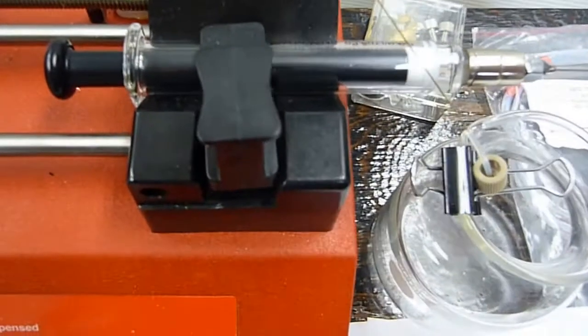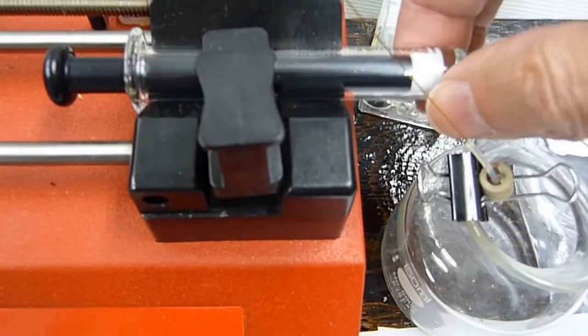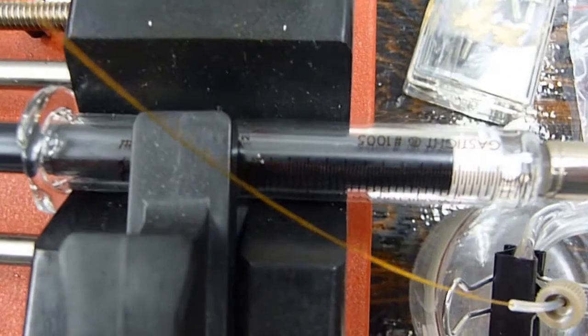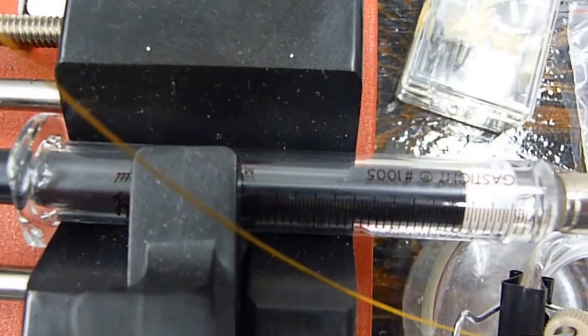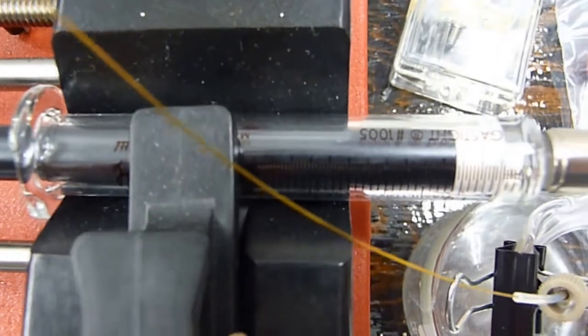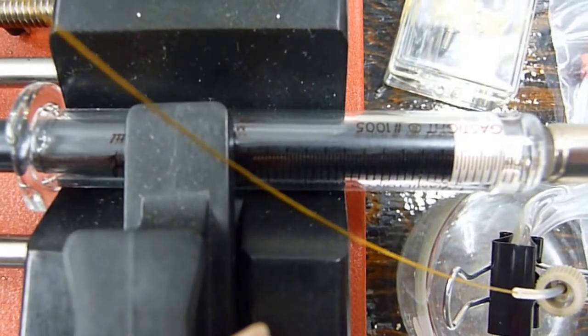And then we have our gas-tight syringe. So let me pull this out. Alright, so it's a Hamilton syringe, 5 ml, gas-tight number 1005.